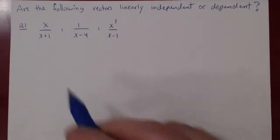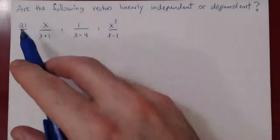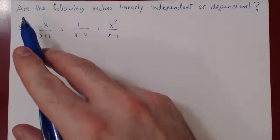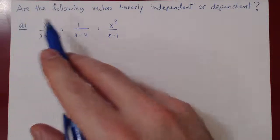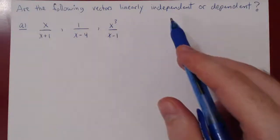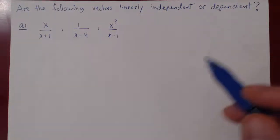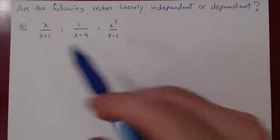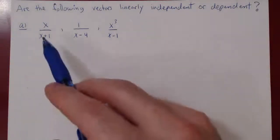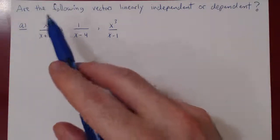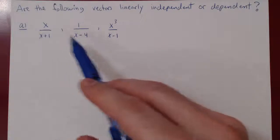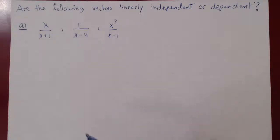In this video, we are considering other examples of the following question: are the following vectors linearly independent or dependent? In this example, we are considering three vectors as rational functions.